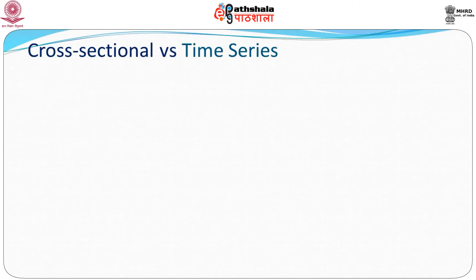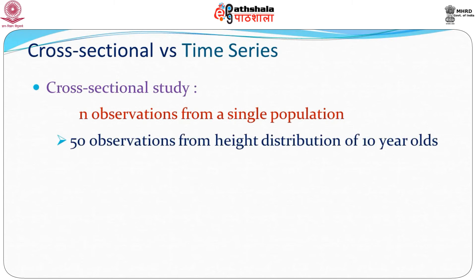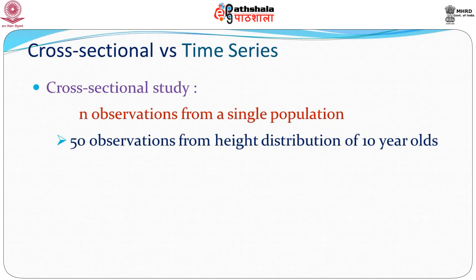In a cross-sectional study, we have n observations from a single population. Going back to our example, we are looking at 10-year-olds and we have 50 observations from the height distribution of 10-year-old girls, which has some mean — say around 4 feet 5 or 4 feet 6 inches — and some variability. We have 50 observations taken from this height distribution, which can often be assumed to be normal.